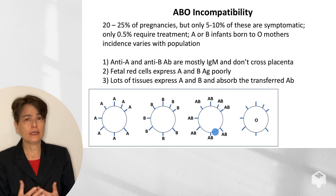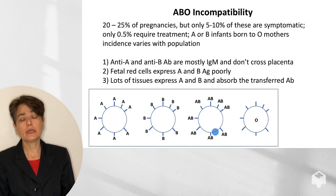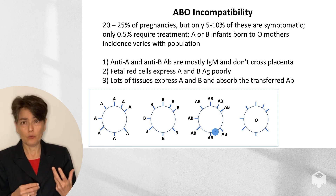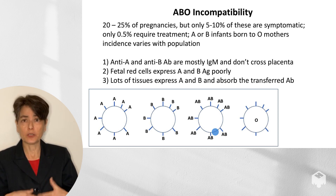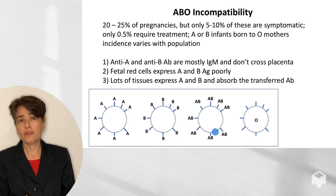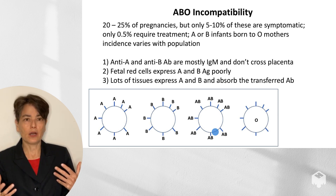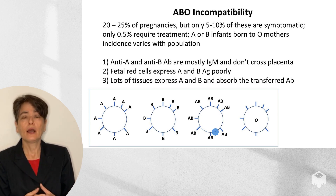Why is ABO incompatibility not such a big deal? First, anti-A and anti-B antibodies are typically IgM, so they don't cross the placenta and cause damage to fetal red cells. Second, fetal red cells express A and B antigens poorly, so they don't strongly inoculate the mother. Third, even if an IgG response does develop, many tissues throughout the body express A and B antigens — unlike RHD, which is only on red cells — so the transferred antibody is absorbed by many tissues, causing minor diffuse damage rather than the specific anemia seen in RH incompatibility.